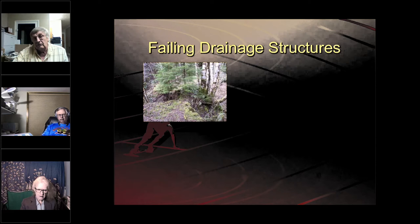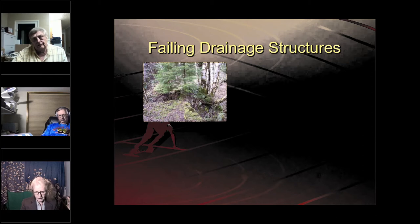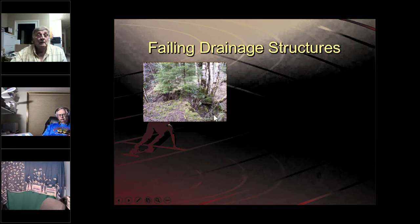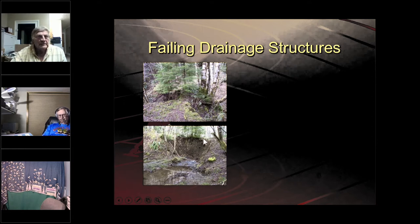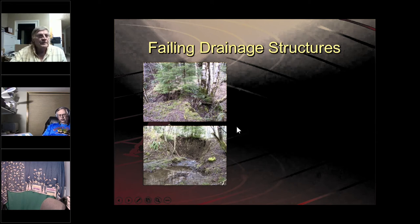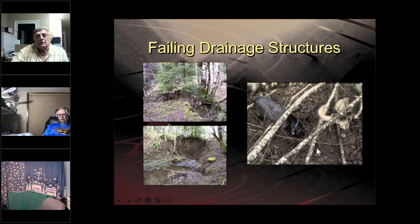Fill drainage structures: this is an old punching fill — typically two logs laid in the bottom of the draw, with split cedar laid across the top and fill placed over them. Over the years the cedar slabs rot out, the fill collapses, and all that goes down through the stream. This is on a fish-bearing stream. This was corrected by a Triple F Double P project — the Farm Family Forest Fish Passage Program through DNR — which removed the fill and put a bridge in.